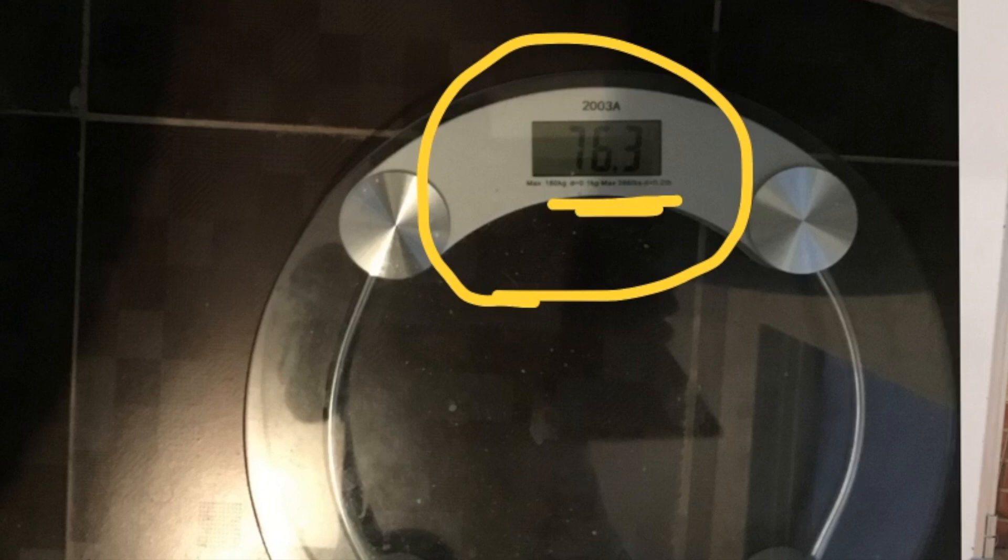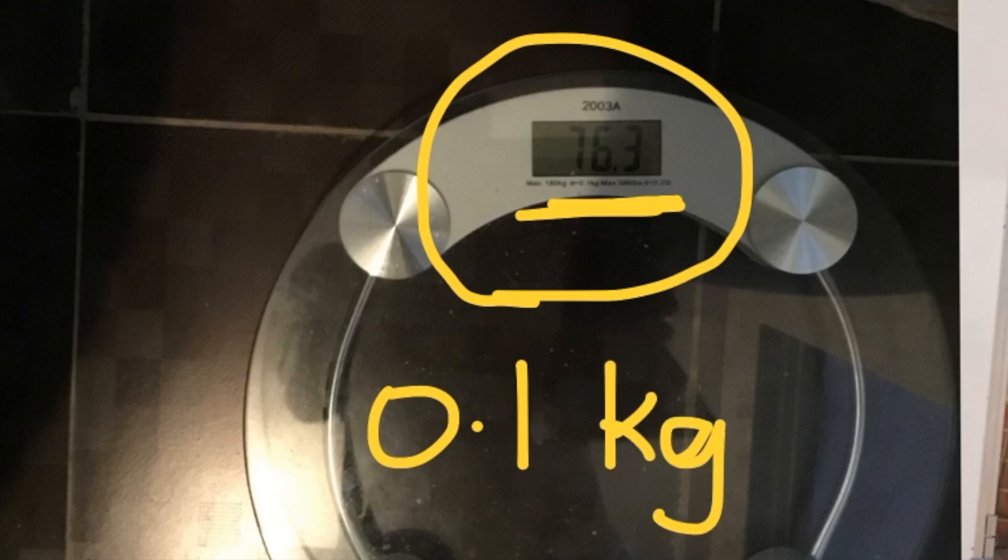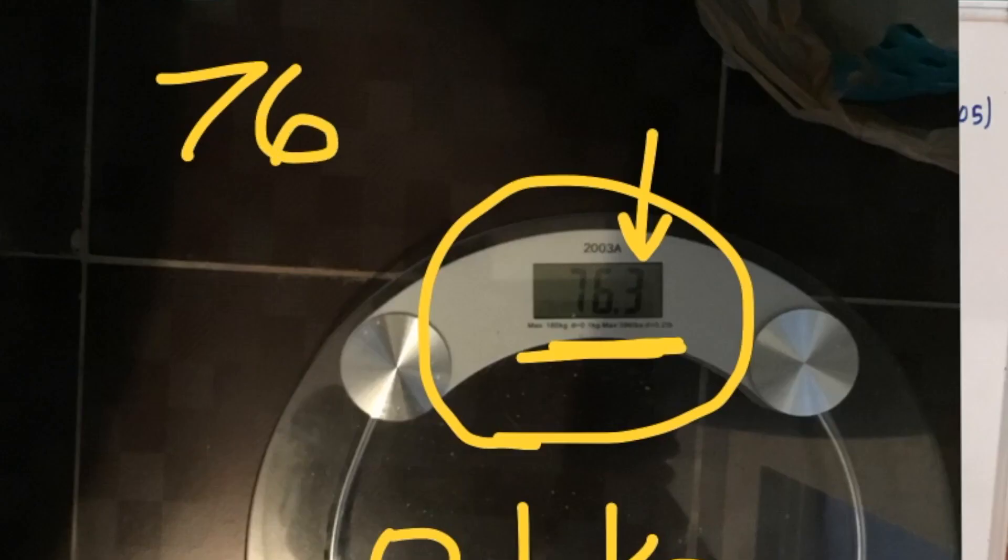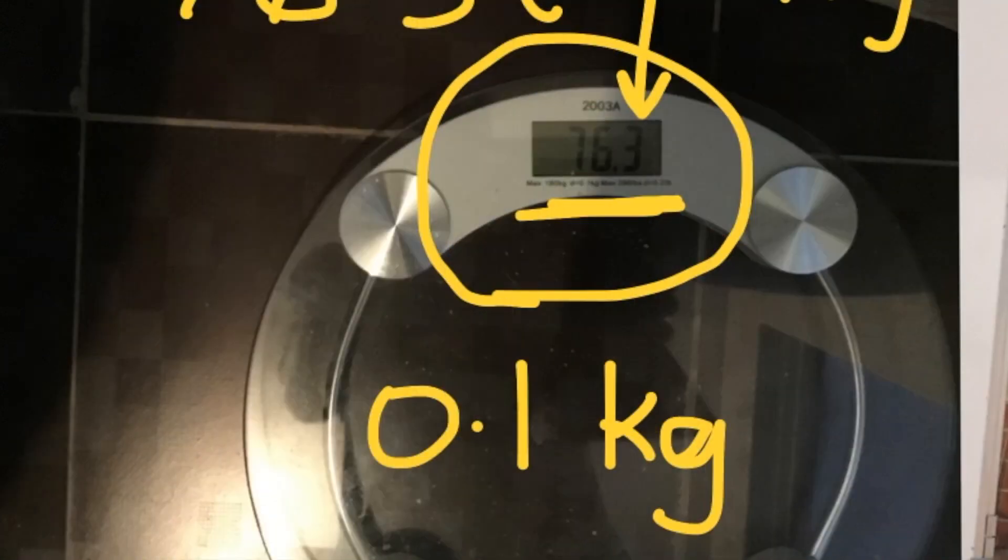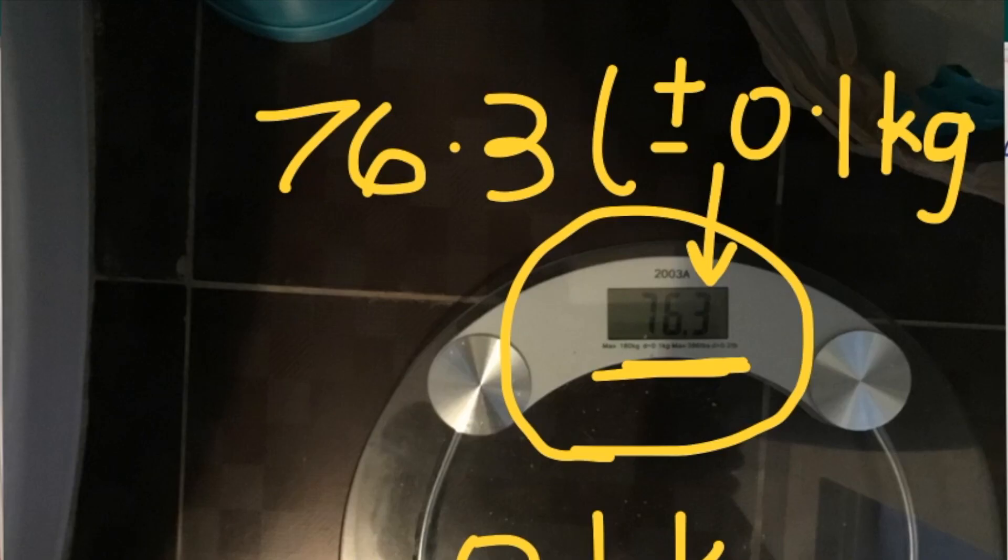And here we can see this bathroom scale. Written here is an uncertainty of 0.1 of a kilogram. This uncertainty is very much consistent with the fact that the mass is reported to one decimal place, or 0.1 of a kg. Which means that when someone finds a mass of 76.3, the uncertainty associated with it is plus or minus 0.1 of a kilogram. But is this a random error or a systematic error? You say it's a random error, then you're correct.